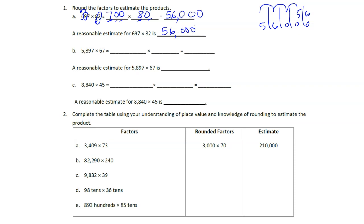For (b), we have 5,897. You might think to round to 5,900, but it's much harder to say 59 times 70 than it is to say six times seven. So since I have my thousands place and my tens place, I'm rounding each to those. My first factor rounds to the nearest thousand — the control number in the hundreds place is eight, which is five or above, so I round up to 6,000.